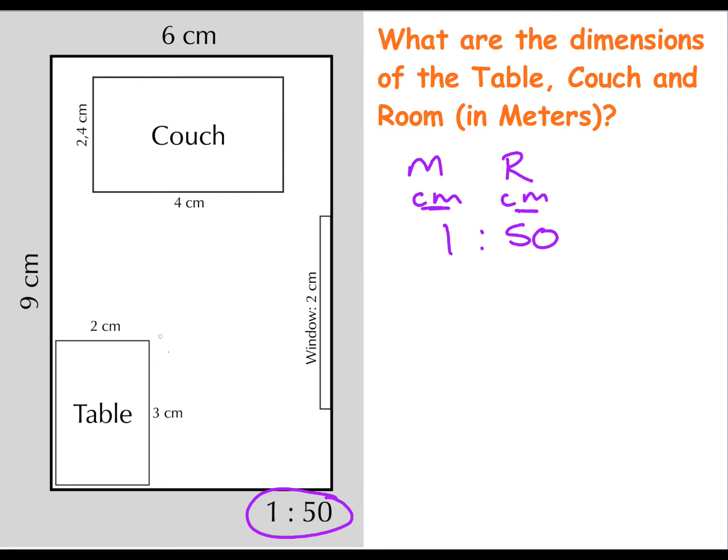Now it's asking what are the dimensions of the table, the couch and the room. So for the table, if you've got 3 centimeters from here to here, when we put 3 under here, we've multiplied by 3. We multiply the other side by 3 and we end up with 150 centimeters. In meters, which is what they've asked for, then that's 1.5 meters. And all you would do is go round the room and take the dimensions for whatever you're looking for and convert them using this strap line.